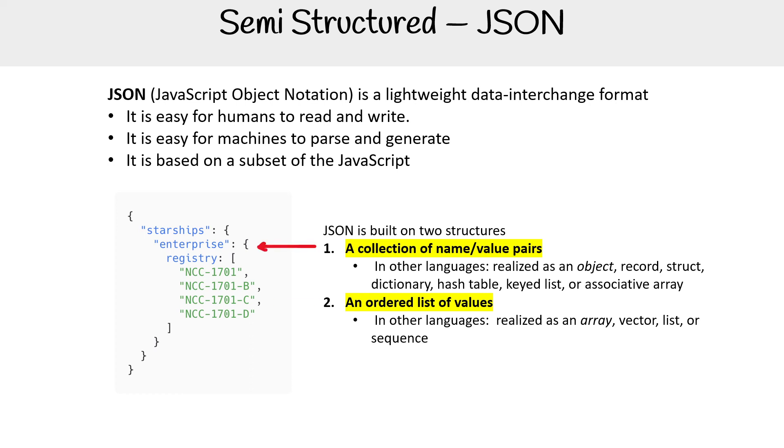Just to point them out, there is the collection and there is the ordered list. JSON is a text format that is completely language independent, so it is used quite a bit these days.